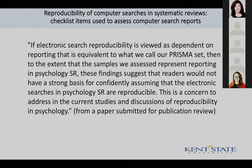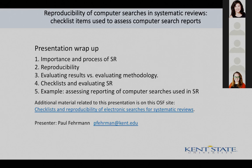If electronic search reproducibility depends on reporting equivalent to what we call our PRISMA set, then to the extent that the samples we assessed represent reporting in psychology, these findings suggest readers would not have a strong basis for confidently assuming that the electronic searches were reproducible. That's my quick report on items that can be used to evaluate the reporting of computer searches in systematic reviews. I'll have information on this on the OSF site. Thank you.